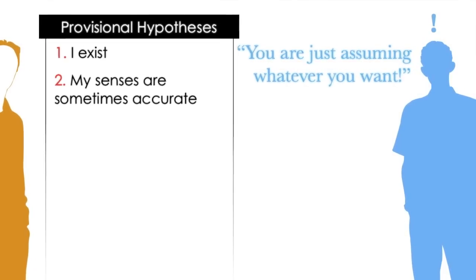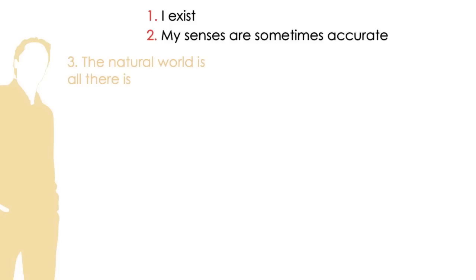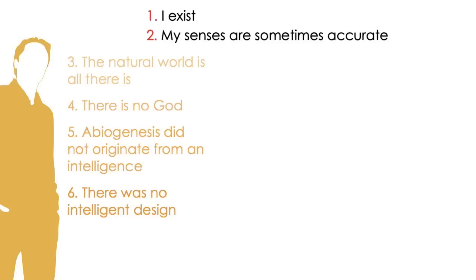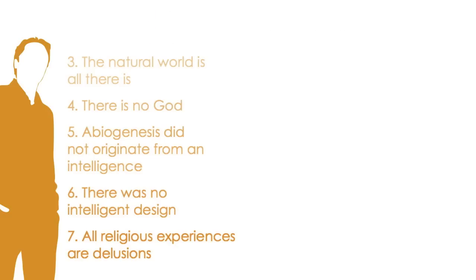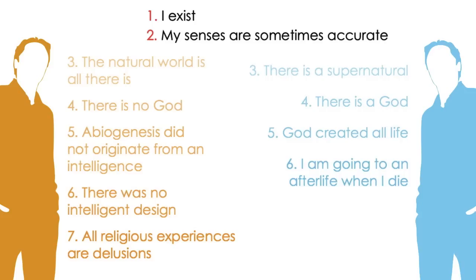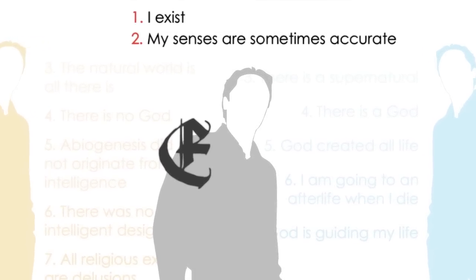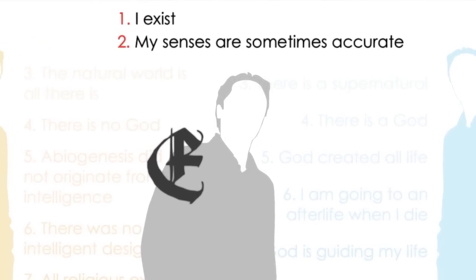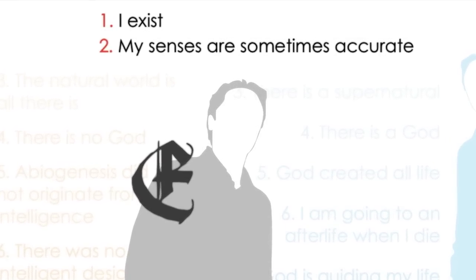Some people have argued that if I make these basic assumptions, I can just assume whatever I want. But that isn't true. If I were assuming whatever I want, I would assume I exist, assume my senses are sometimes accurate, assume the natural world is all there is, assume there is no God, assume abiogenesis did not originate from an intelligence, and so on. Alternatively, I could assume there is a supernatural, assume there is a God, assume this God created all life, and so on. But I'm not taking either of those highly presumptive stances. On the contrary, I am assuming as little as possible just to function in the world and then letting the evidence tell me the rest.